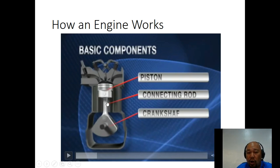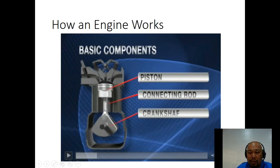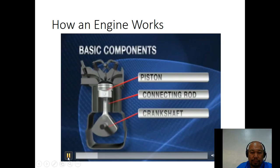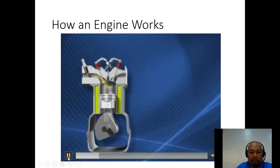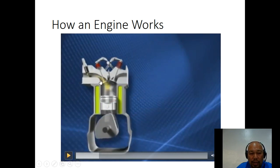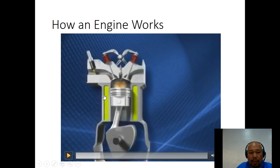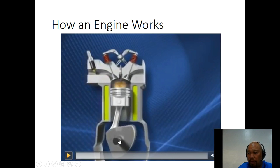As the piston travels up and down, it goes down in the cylinder. The crankshaft is oriented like this — it rotates. So basically, a crankshaft looks like this shape, and as it rotates, it converts the linear motion of the piston into rotational motion.